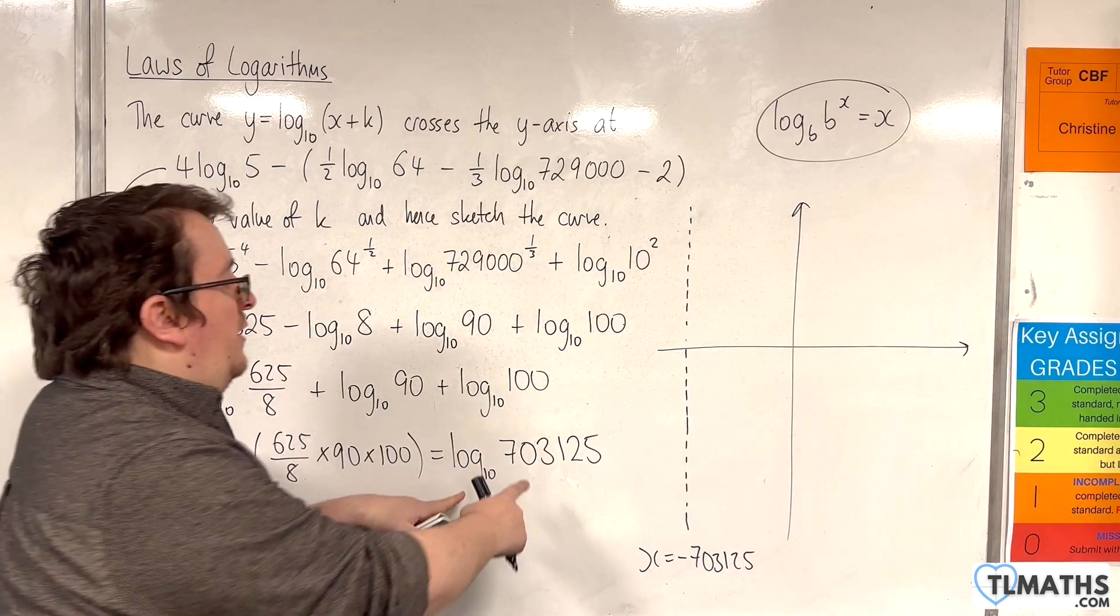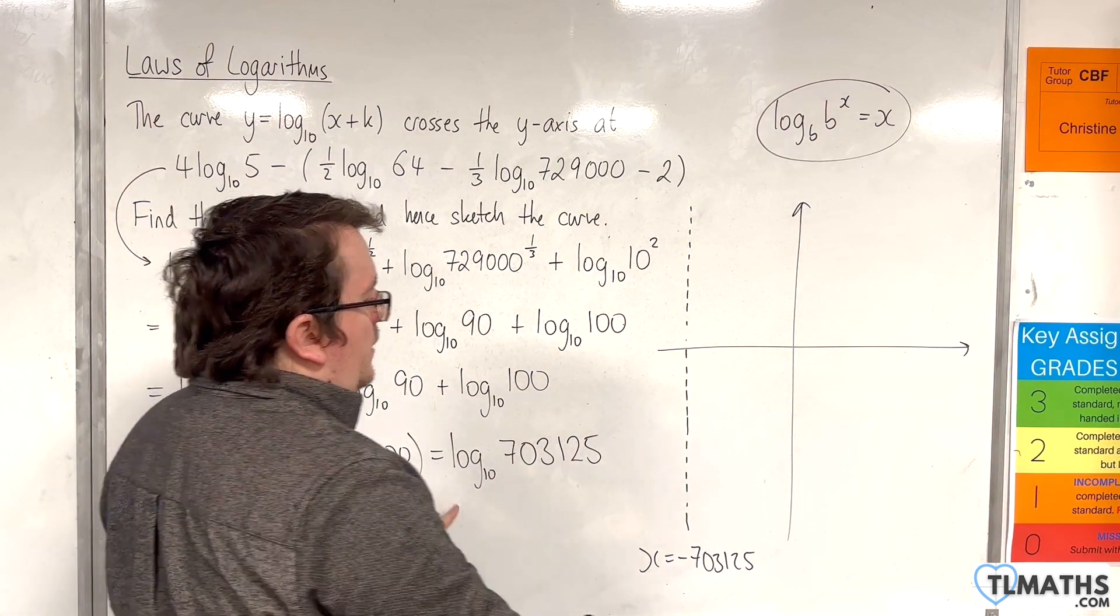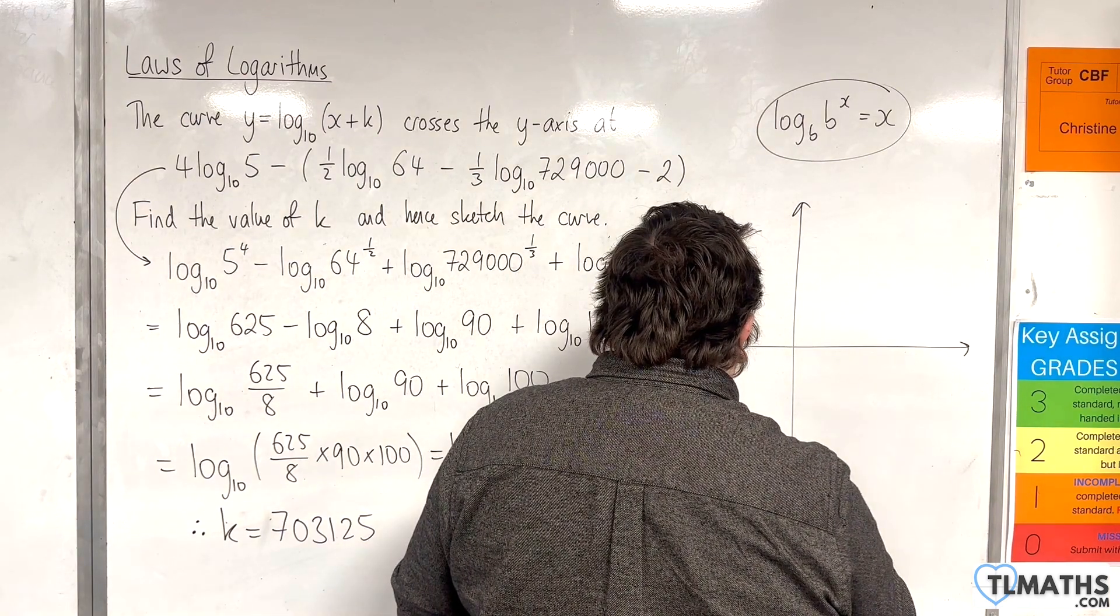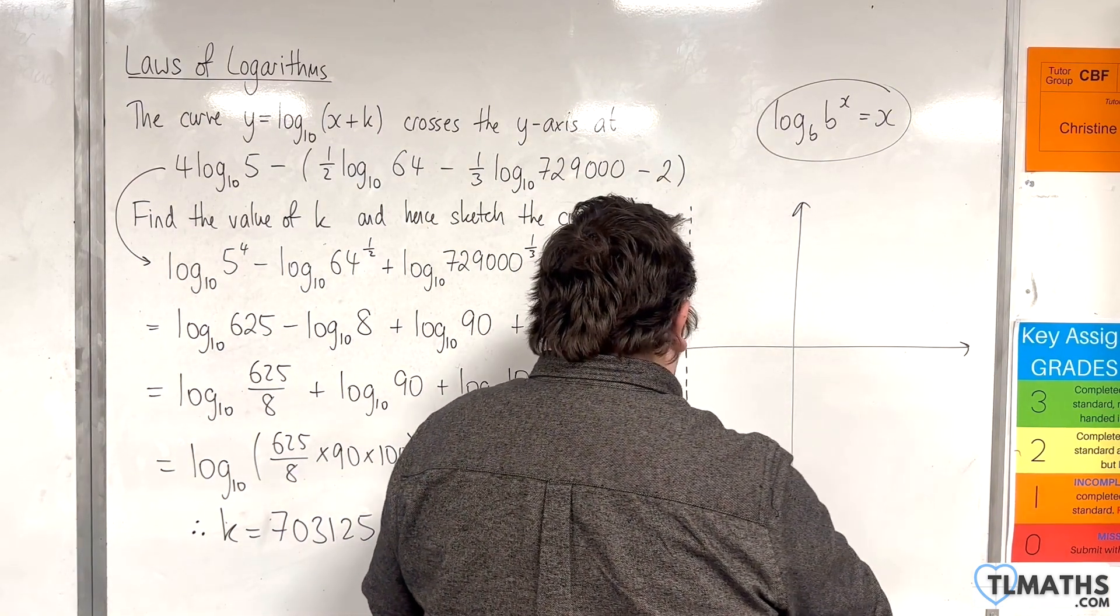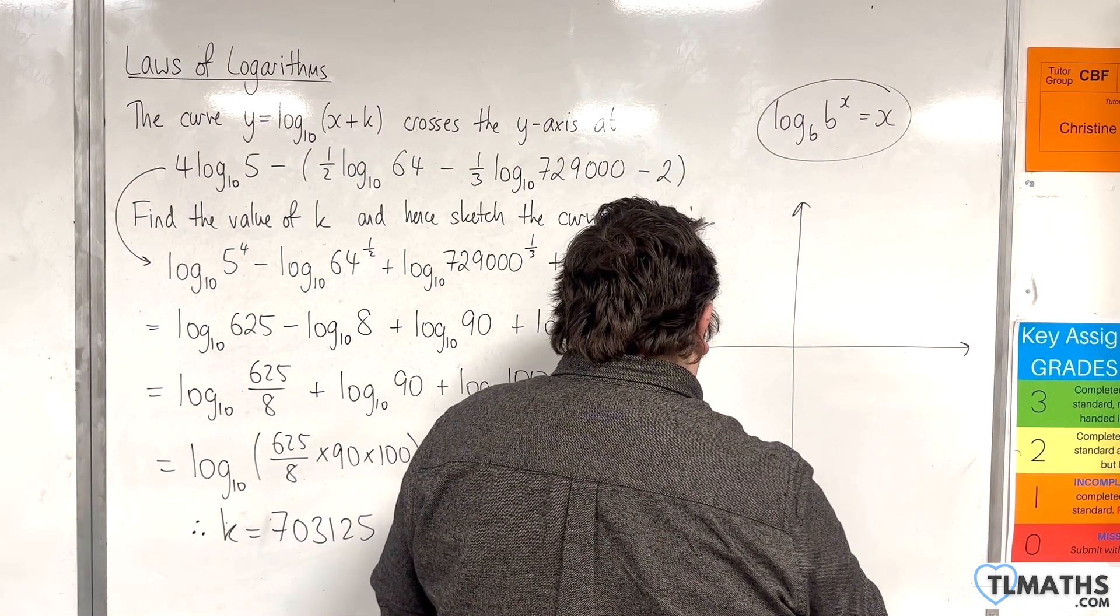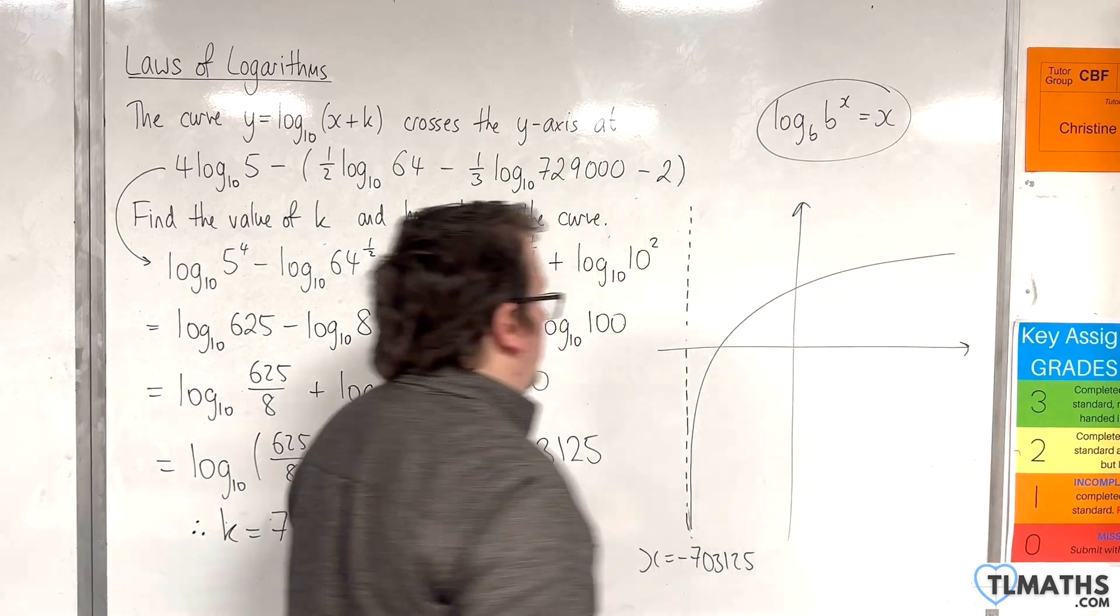Now, this is going to be a positive value. So that means our curve, if I can try not draw it so poorly, it will look something like that.